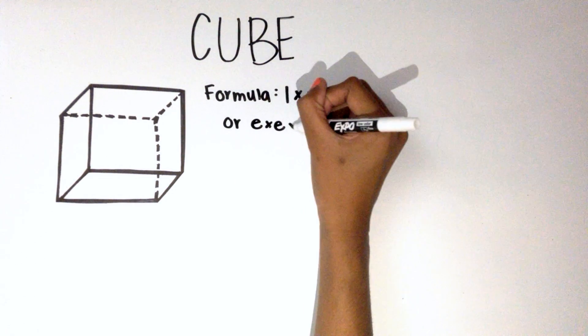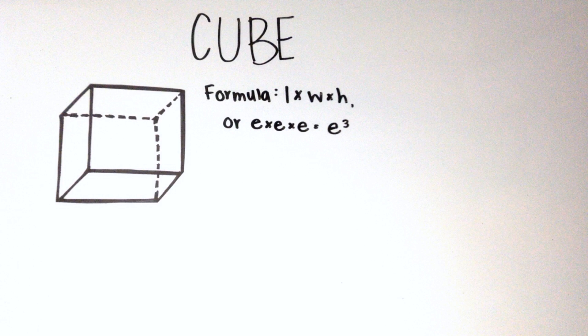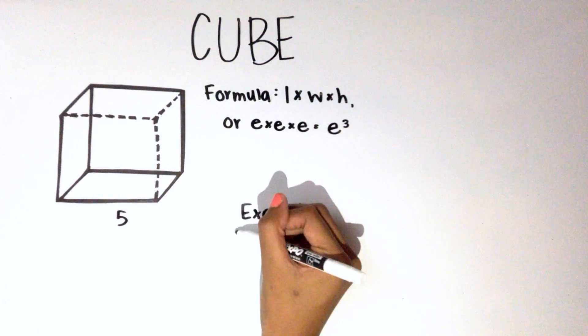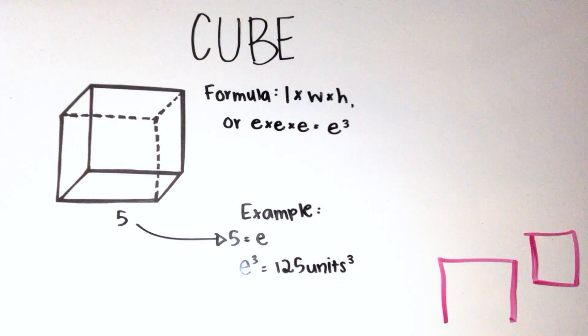cube is length times width times height, or edge times edge times edge, which is edge cubed. Notice the little three at the top that shows the shape is three-dimensional.